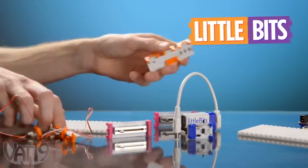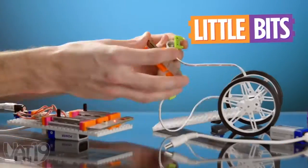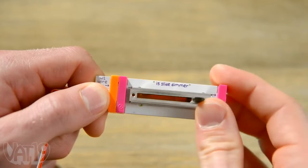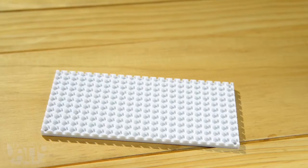Up next is Little Bits. With these, these are magnetic pieces of computer that you're going to stick together to make something. It might be a musical instrument. It might be a car that can move.